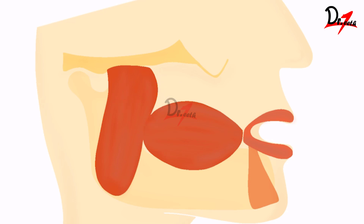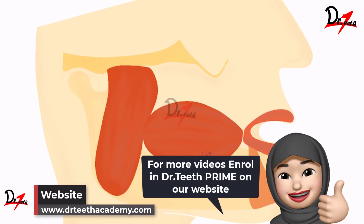The swelling will extend from here all the way like this — with a superior extent till the zygomatic arch, below to the angle of the mandible, and anteriorly limited by the anterior border of the masseter muscle. Clinically, this feature is very important for diagnosis. Medially, we have the buccinator muscle, and laterally, towards you, we have the skin and subcutaneous tissue.